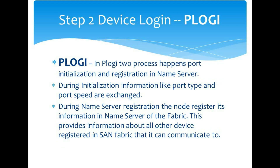The next step is PLOGI, or Port Login. In PLOGI, two processes happen: port initialization and registration in the nameserver. During port initialization, information like port type and port speed are exchanged between the switch and the device. Based on this, the switch negotiates and determines what type of N device is connected. If the port type is N port, a host or storage array is connected; if the port type is E port, another switch is connected.